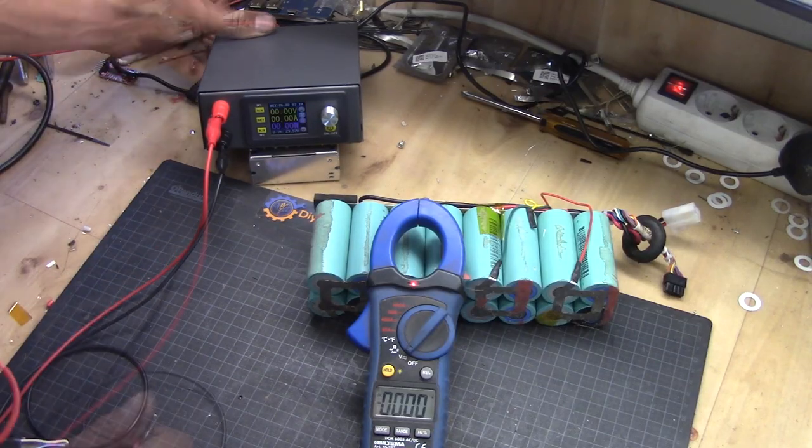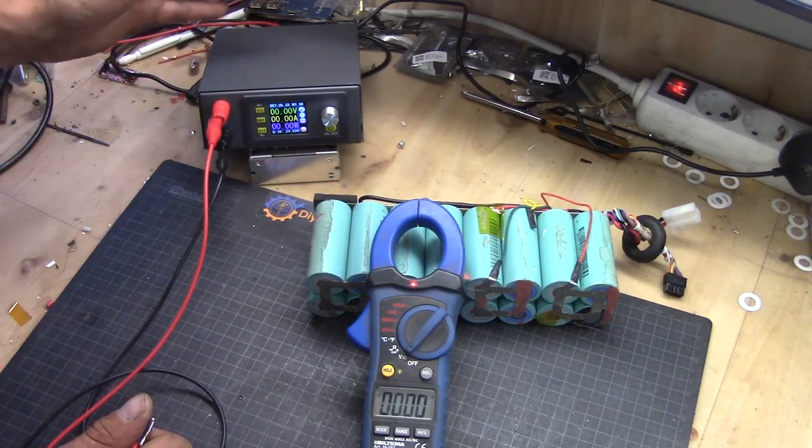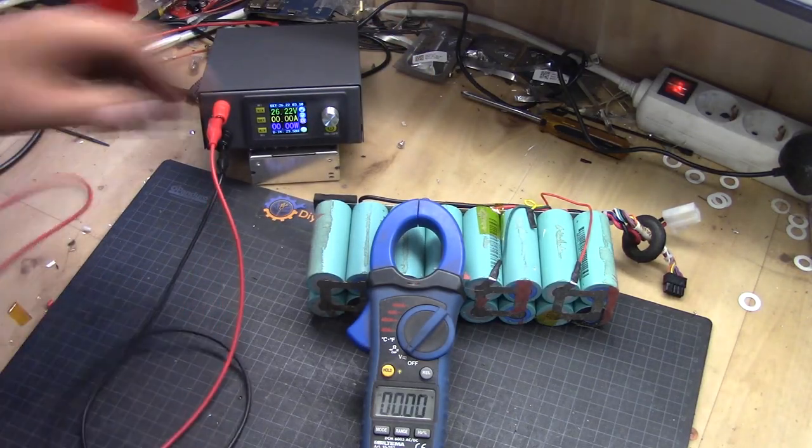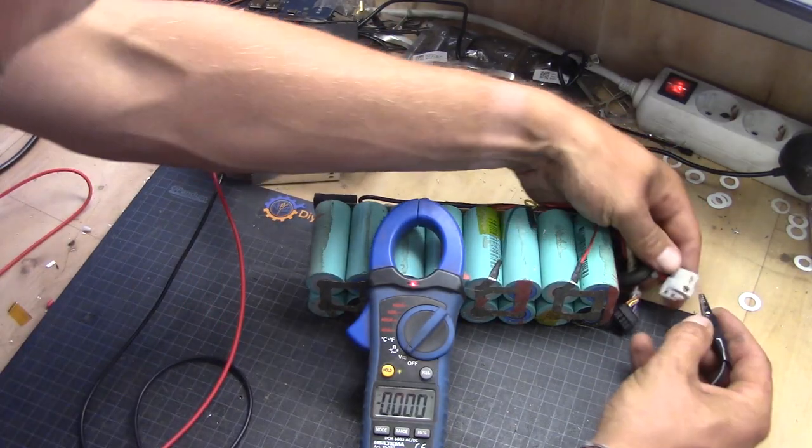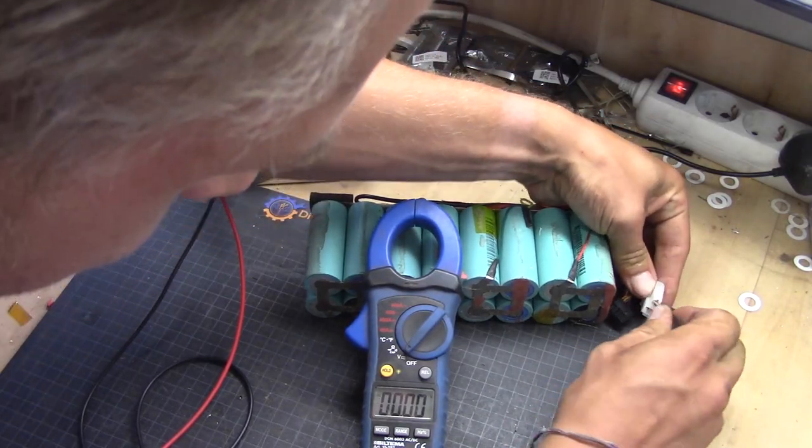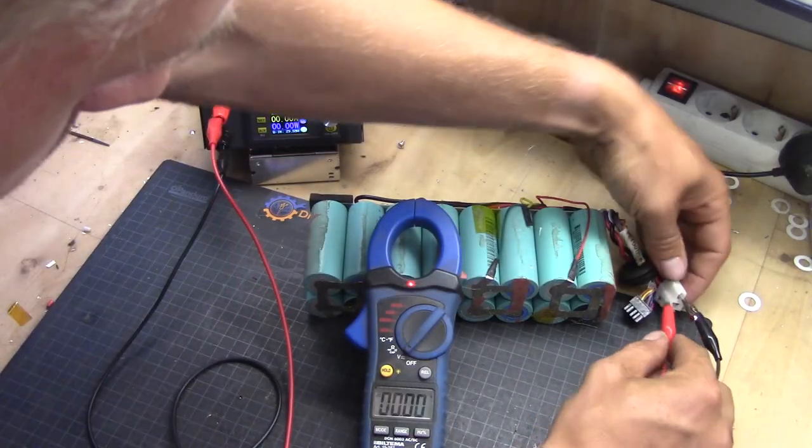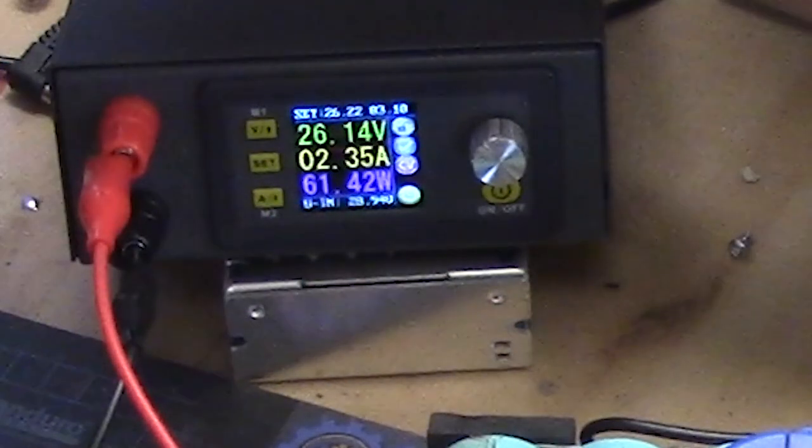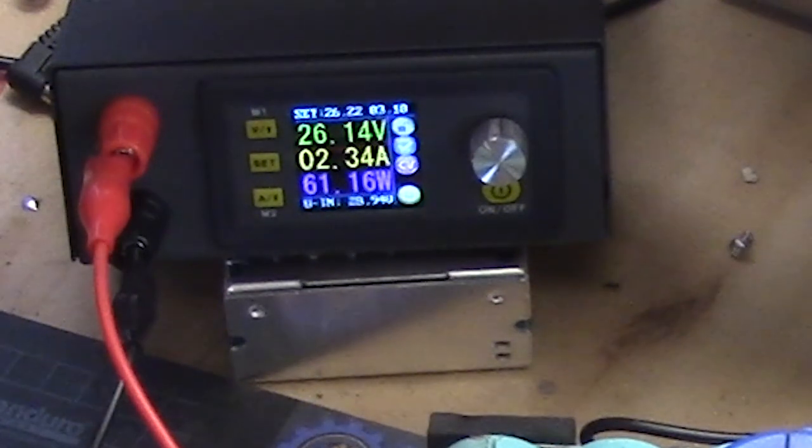So let's start it up again. 26 volt set. 3 amp. And we start this on. And we go back and hook this up. Negative to negative. Positive to positive. And if you can see this now, you can now see that I can charge through the BMS port again.